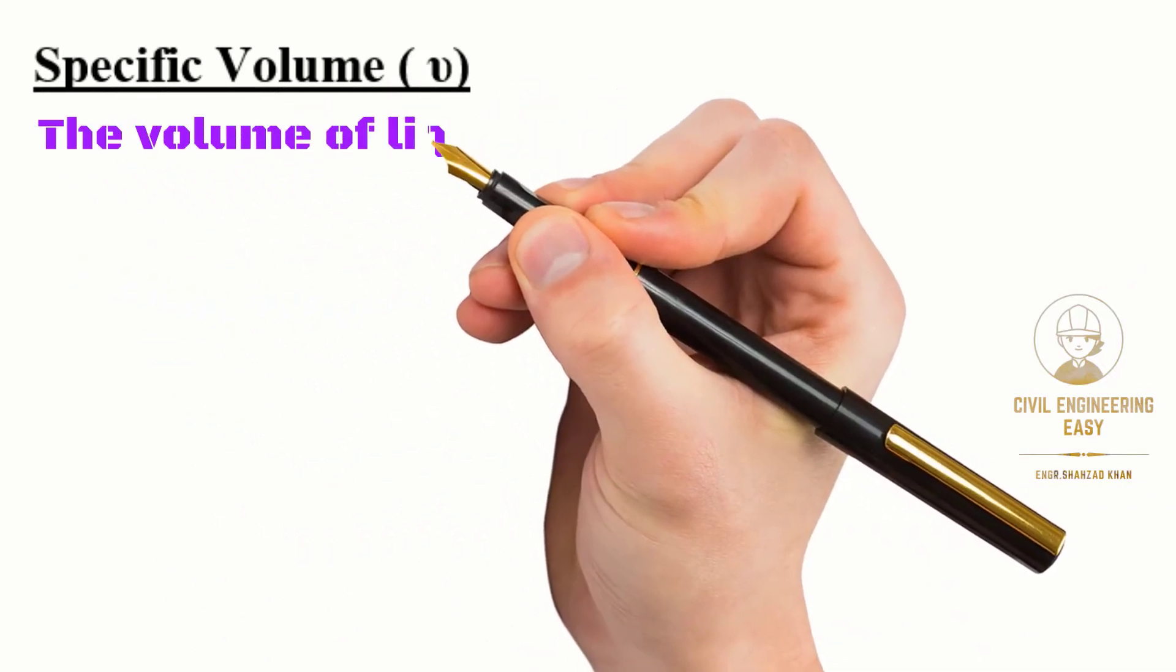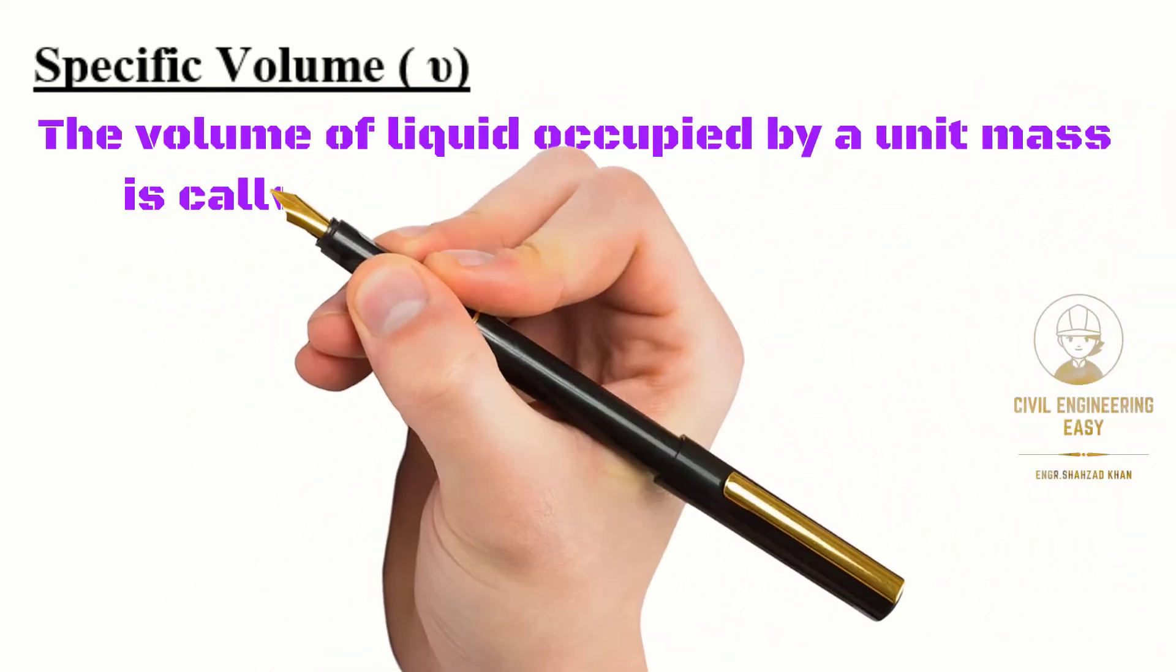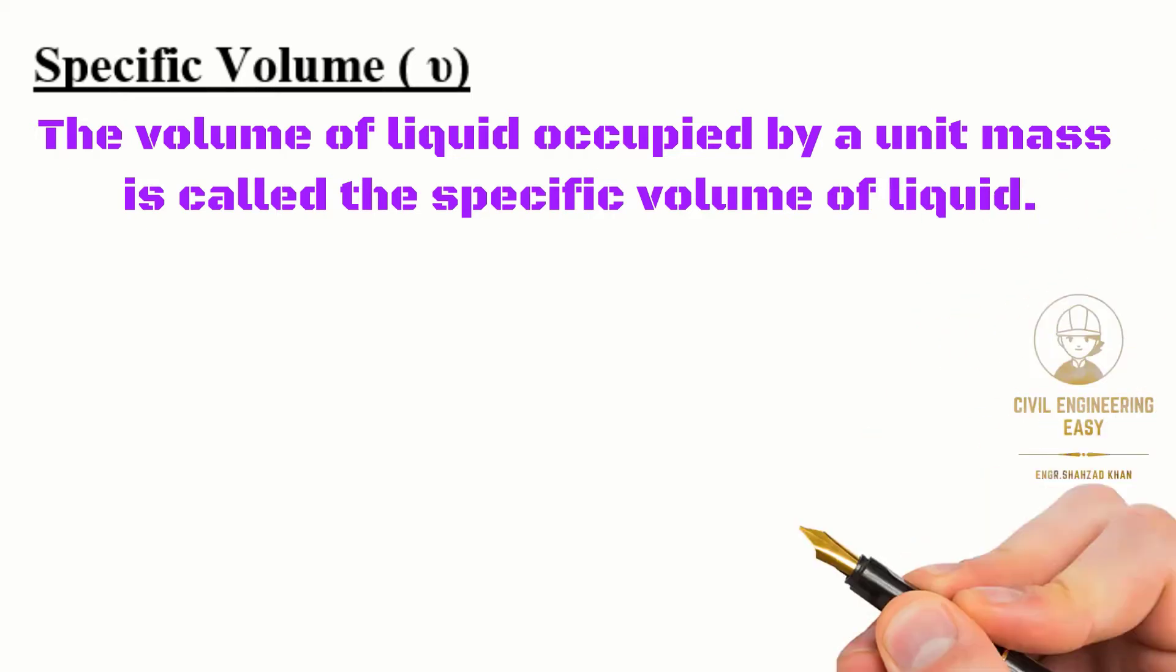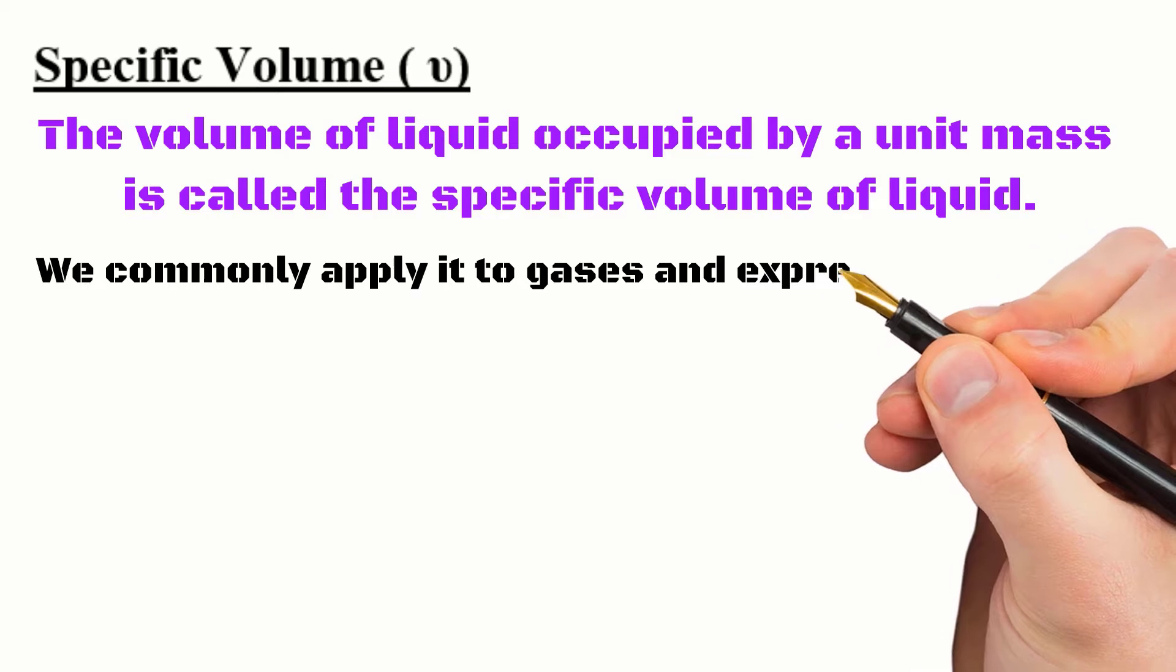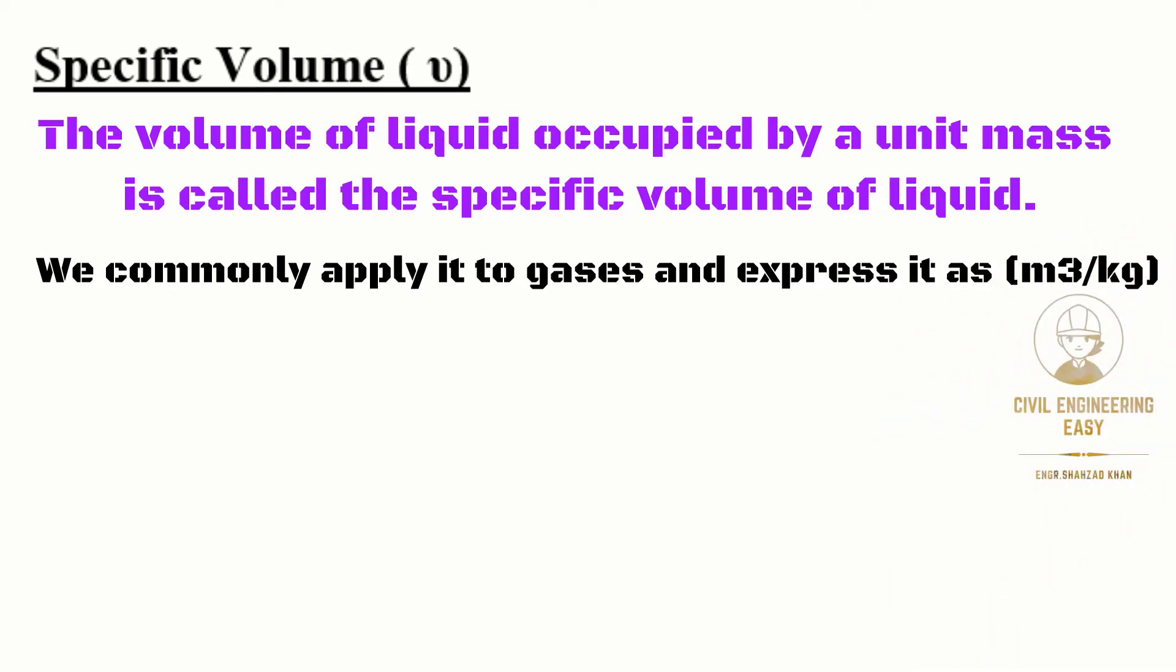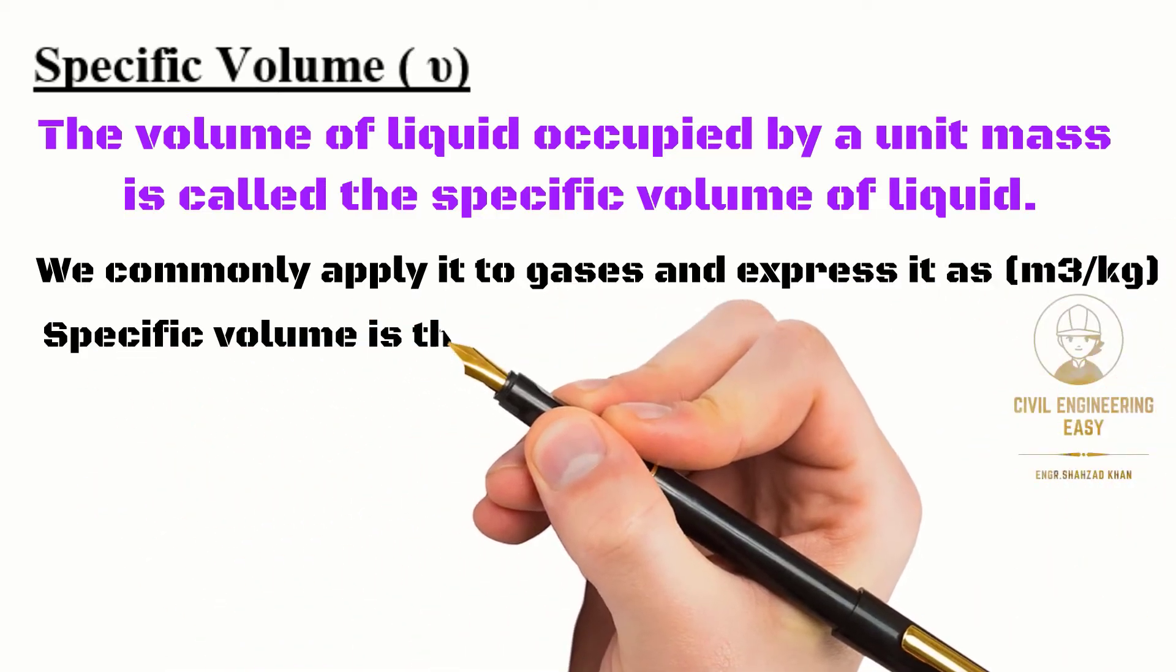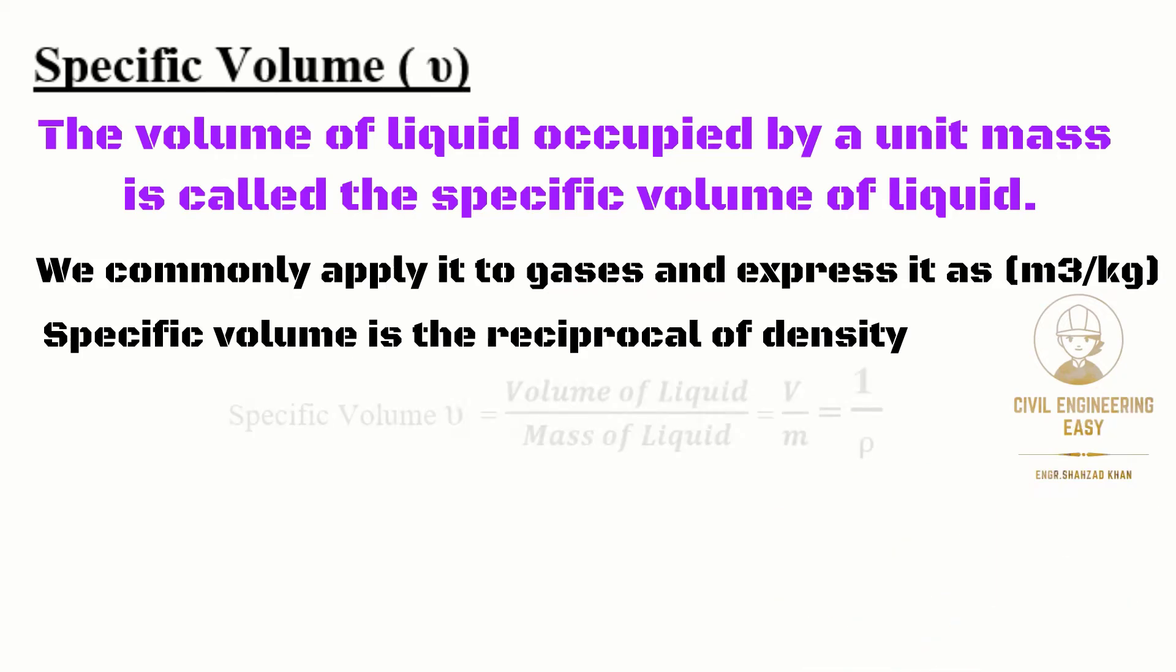Specific volume is defined as the volume of liquid occupied by a unit mass. We commonly apply it to gases and express it as cubic meter per kilogram in SI. Specific volume is the reciprocal of density: specific volume equals volume of liquid divided by mass of liquid.